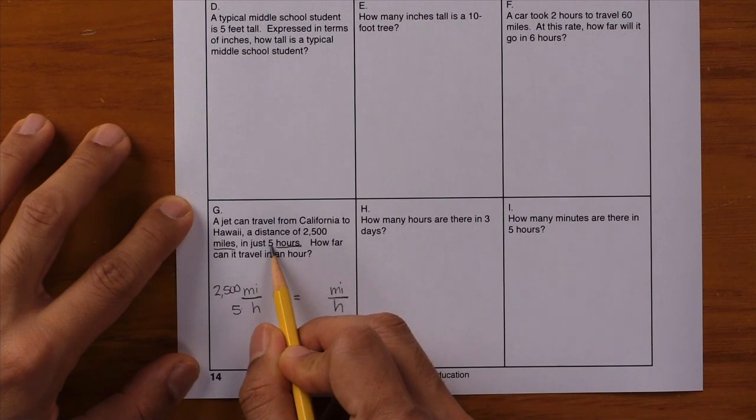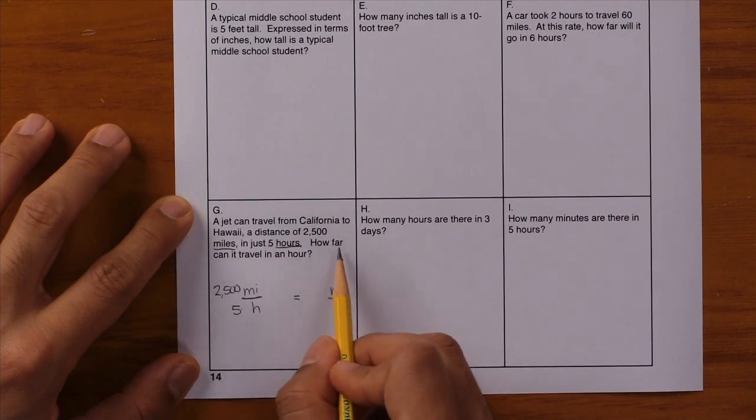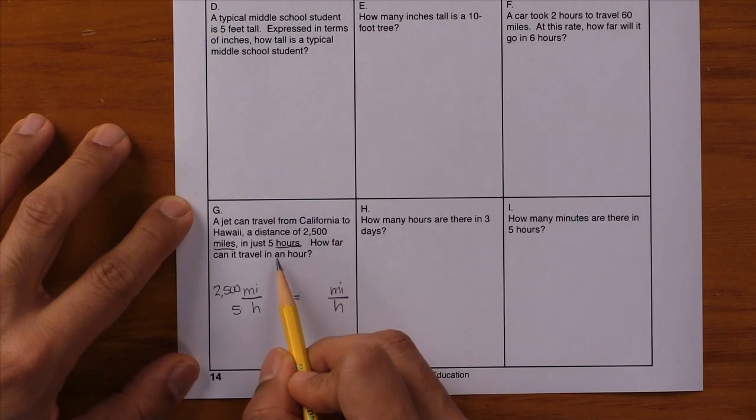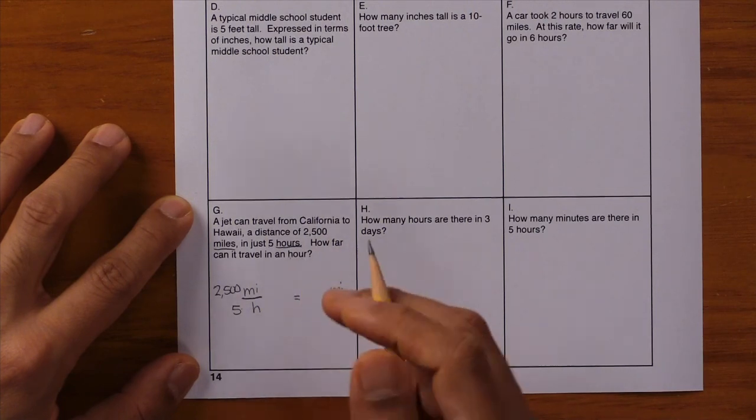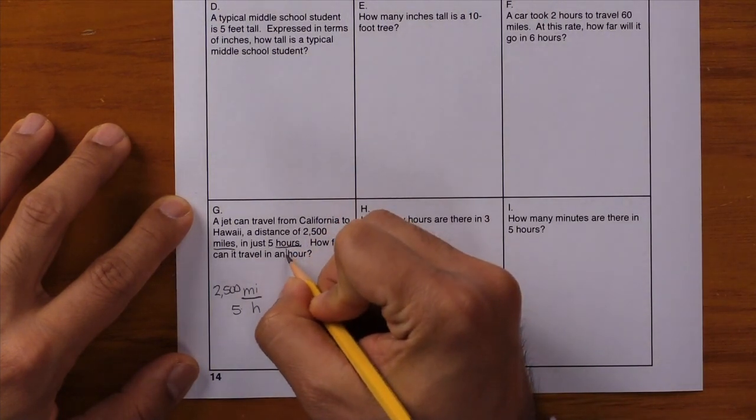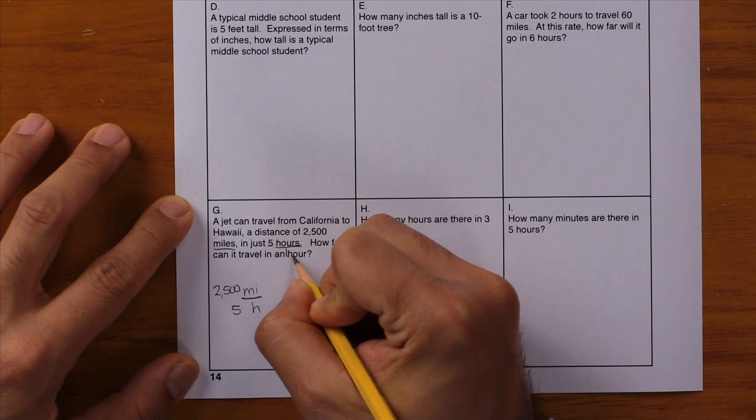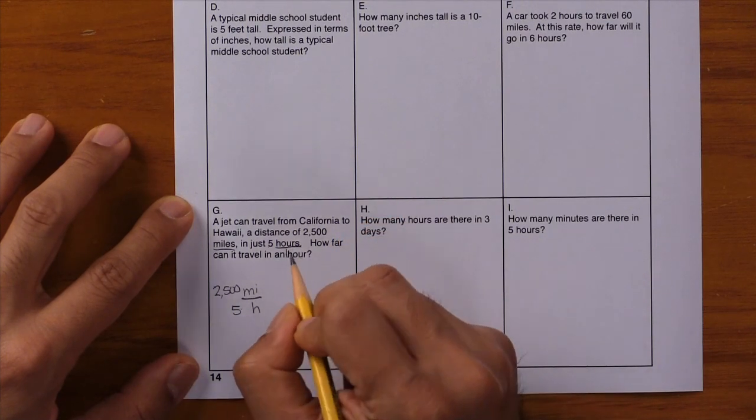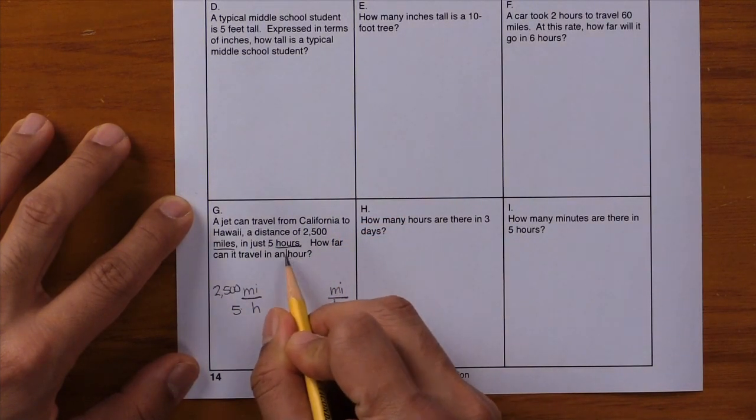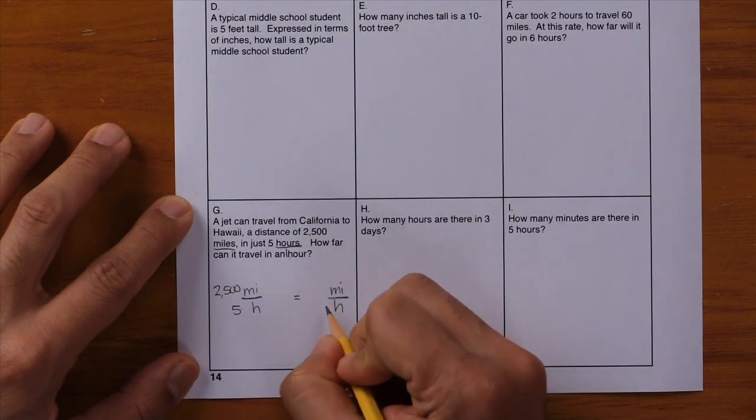So if you take a close look at the question, it says how far can I travel in an hour? An hour means one hour. So this actually means one hour and that's your missing number. And where does that 1 go? It goes with H for hours. So write it down.